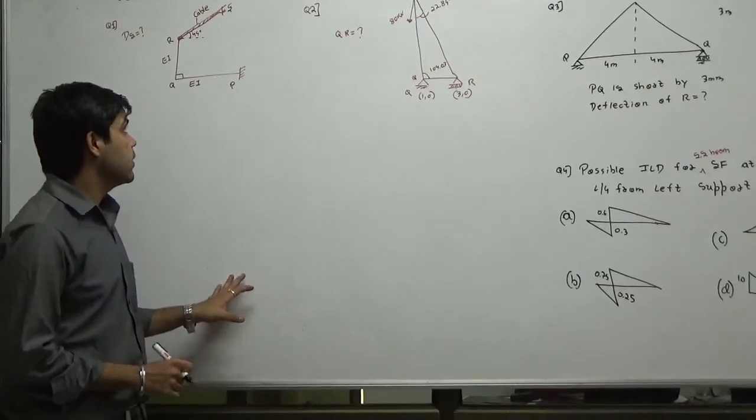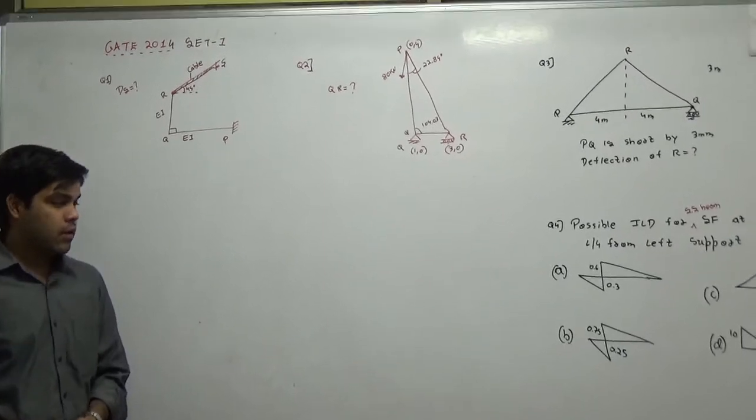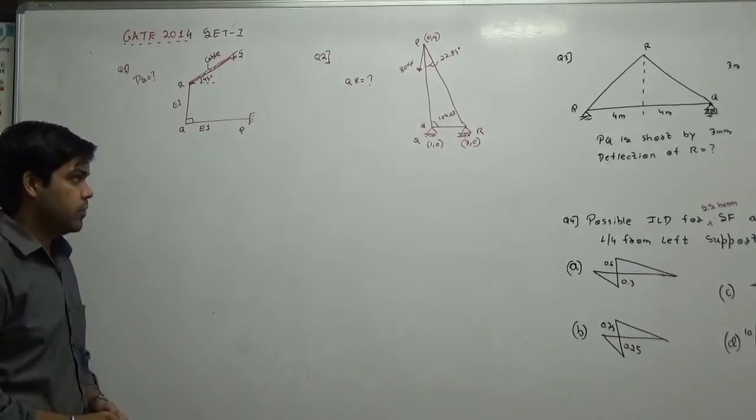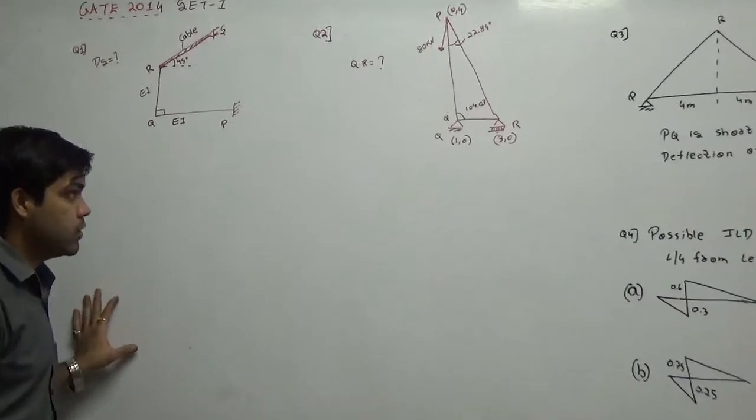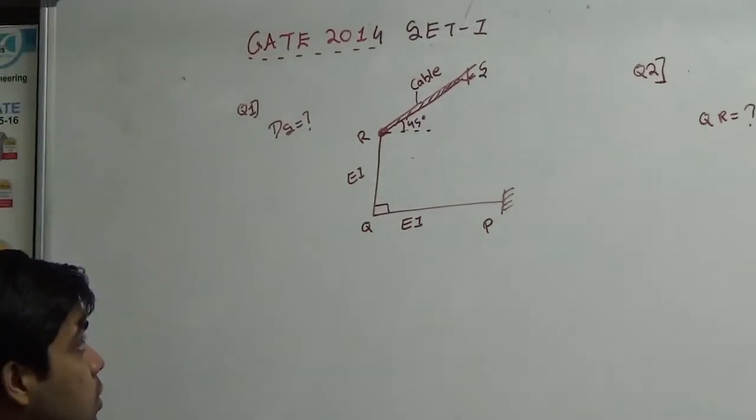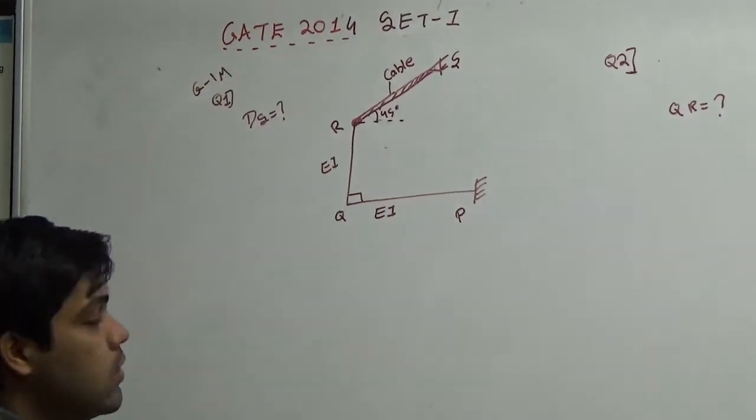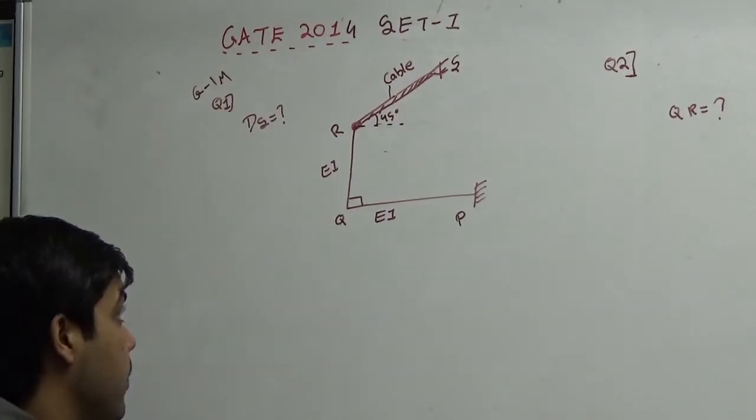So, the next video is on 2014 set 1 paper. There were around 6 problems again in this question paper on structures. I have chosen the more complicated problems here. So, the very first problem was of one mark only and it was asked to find out the static determination of this problem.